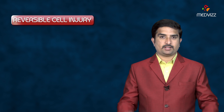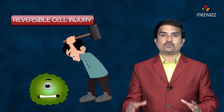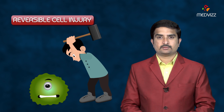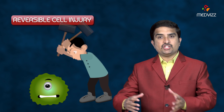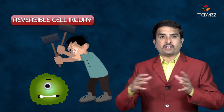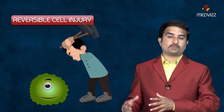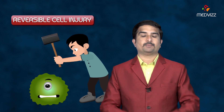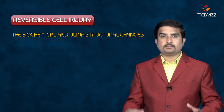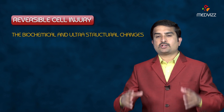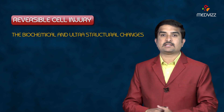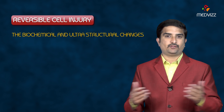Reversible cell injury: when cell injury is mild to moderate, the injured cell may revert back to normal. This is referred to as reversible cell injury. The biochemical and ultrastructural changes in reversible cell injury are as follows.